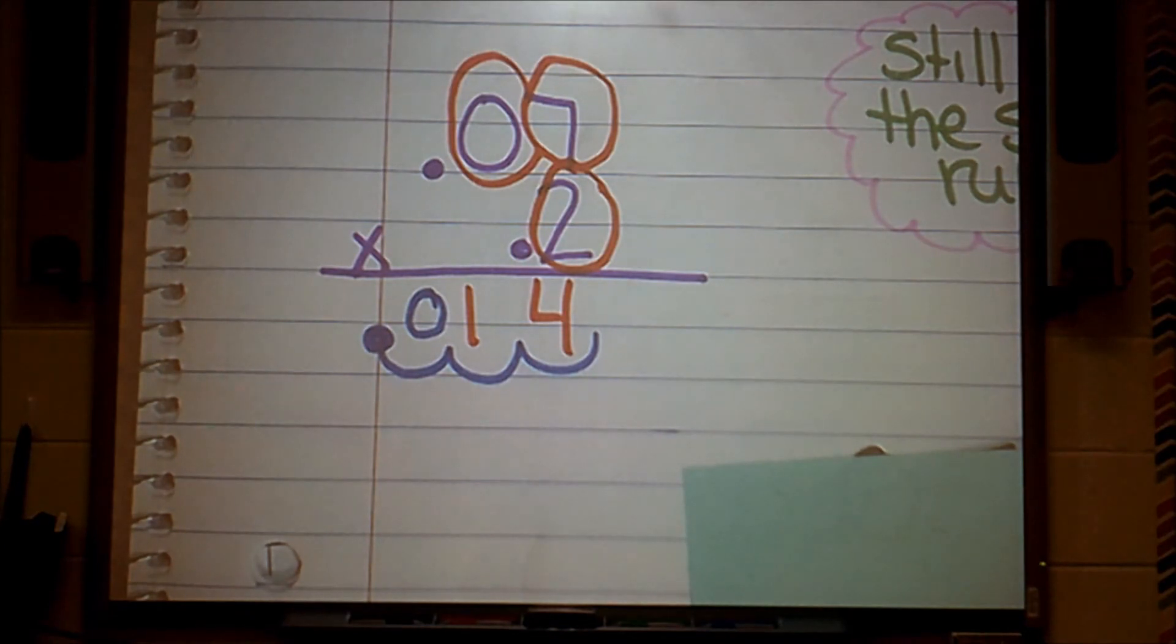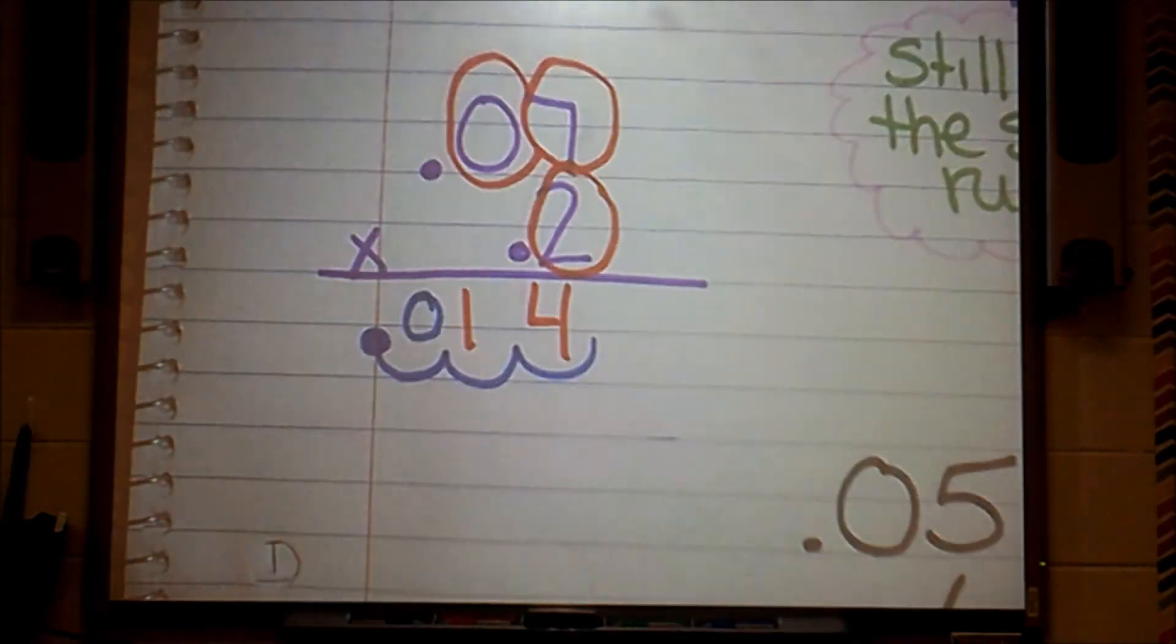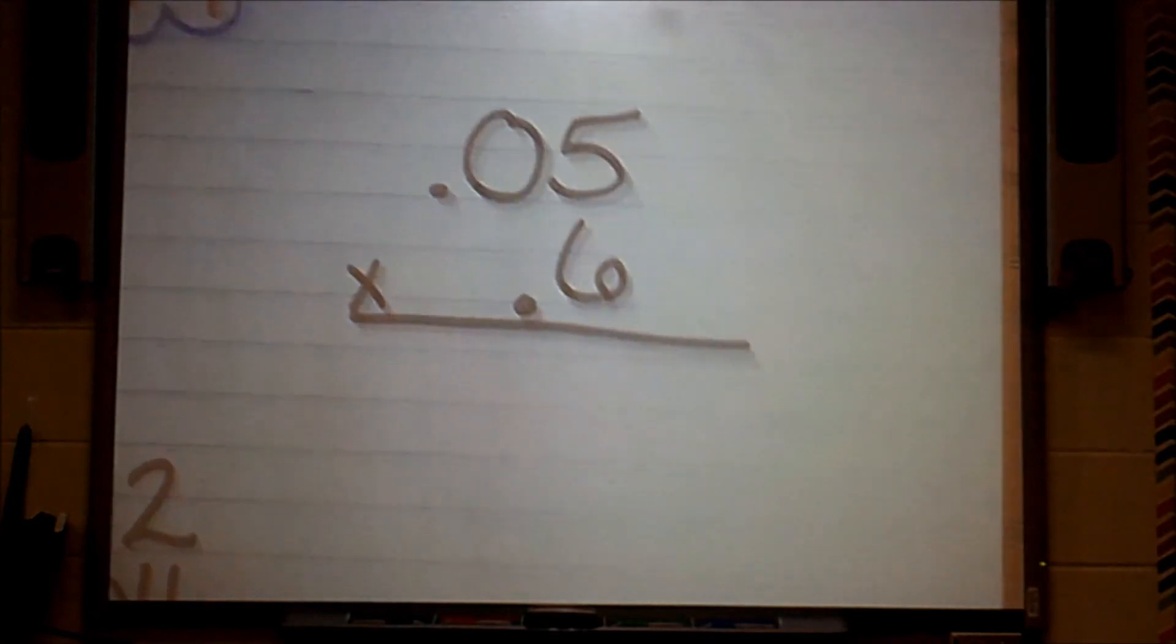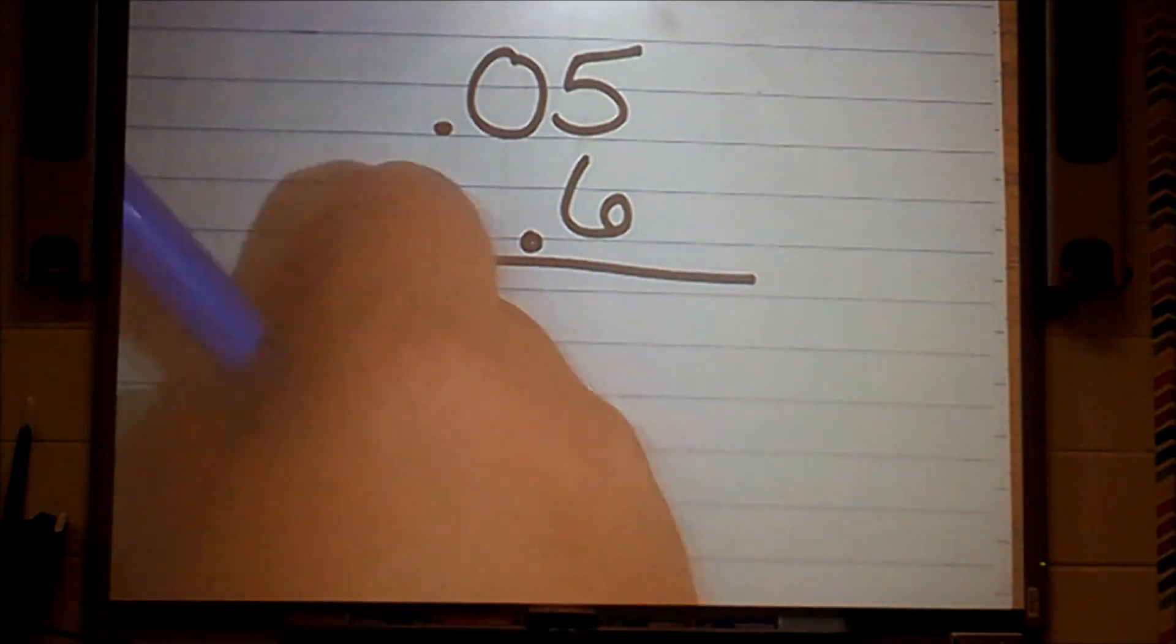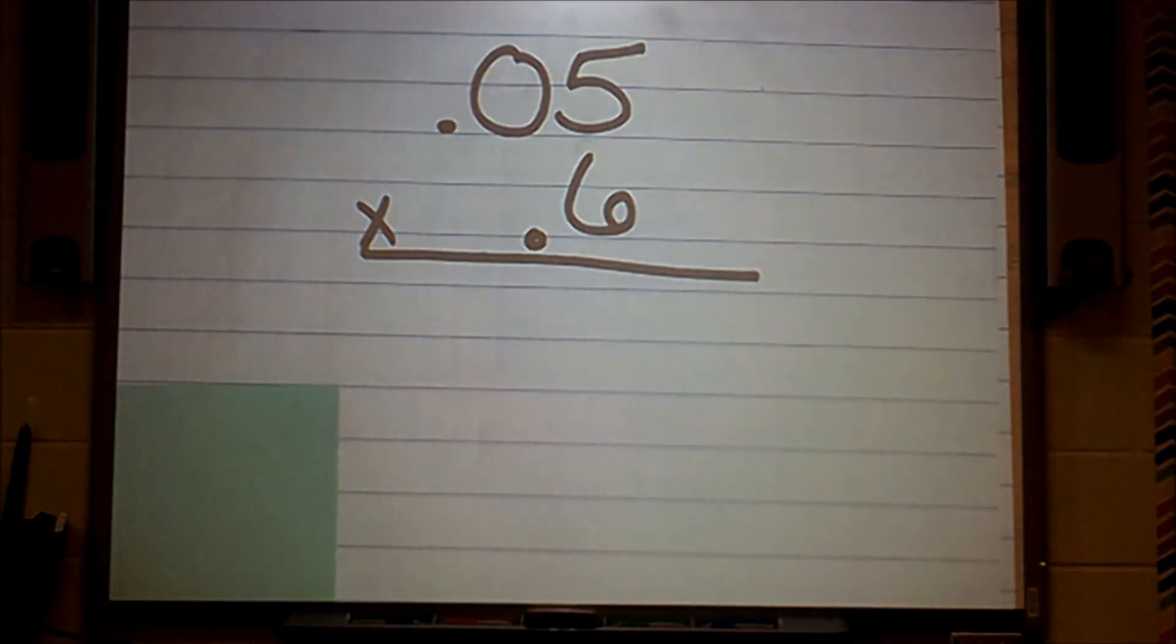Let's try another one. 0.05 times 0.6. Just as I said before, we're going to forget about these decimals and I'm just simply going to multiply 5 times 6. When I multiply 5 times 6, I get a product of 30.